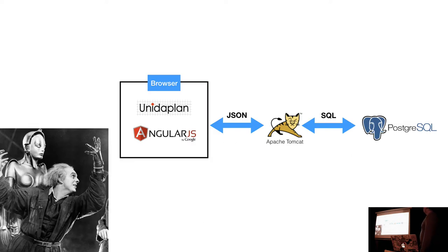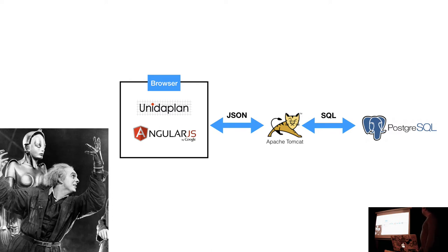The architecture principle is simple: you have a PostgreSQL database, and Apache Tomcat runs on the server with Java code that contains the queries. The web browser gets the entire Angular web app in one go, and then it communicates via JSON objects going back and forth. The Java layer mainly consists of one function — a table-to-JSON converter. If you ever need to write a backend with PostgreSQL, you're free to use that function. It's all on GitHub.